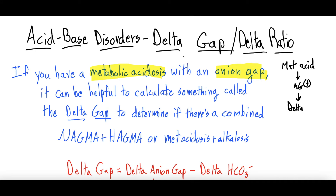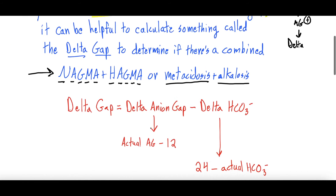What the delta gap determines is whether there could be a combined acid-base disorder. Specifically, it can identify a combined non-anion gap metabolic acidosis with a high anion gap metabolic acidosis, or even a metabolic acidosis combined with a metabolic alkalosis. This is important clinically and is also commonly tested.